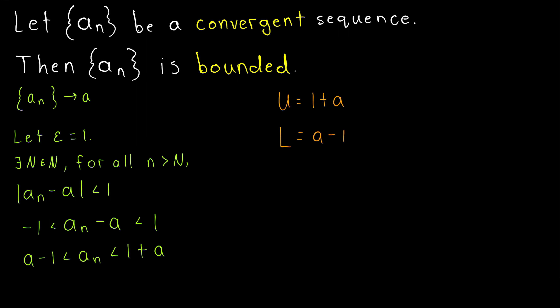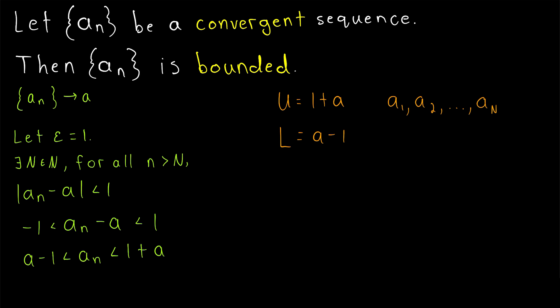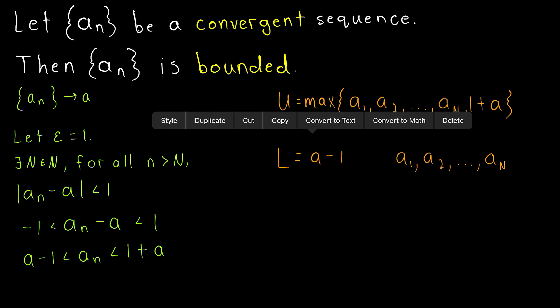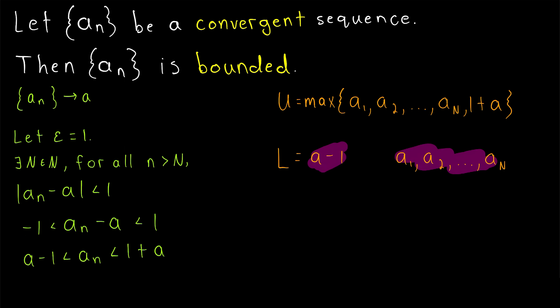So the only terms left that we haven't accounted for are the first big N terms of the sequence: a_1, a_2, and so on through a_N. It's possible that one of these numbers is actually bigger than one plus a, in which case we could increase our upper bound u accordingly. In order to do that, we'll use the maximum function. So to guarantee that our upper bound will work for all terms of the sequence, we'll let our upper bound u be the maximum of all of these numbers. Similarly for l, it might be the case that one of these numbers is less than a minus one, in which case we decrease l accordingly, so we'll let l be the minimum of all of these numbers.